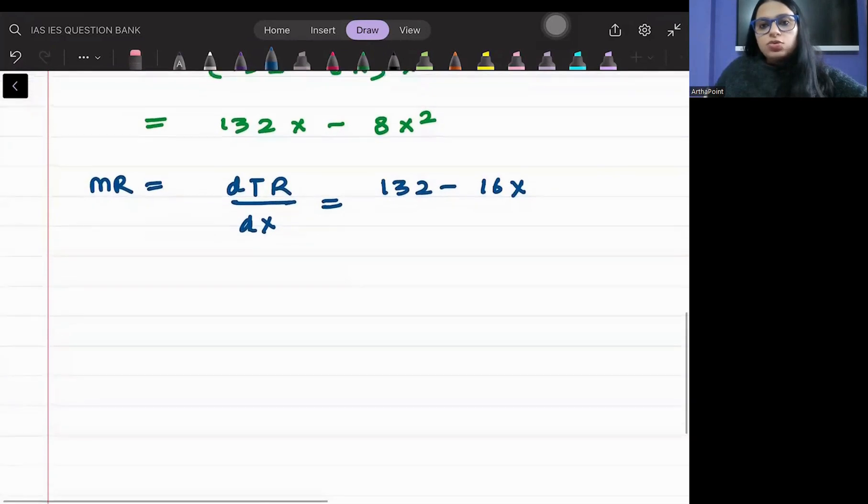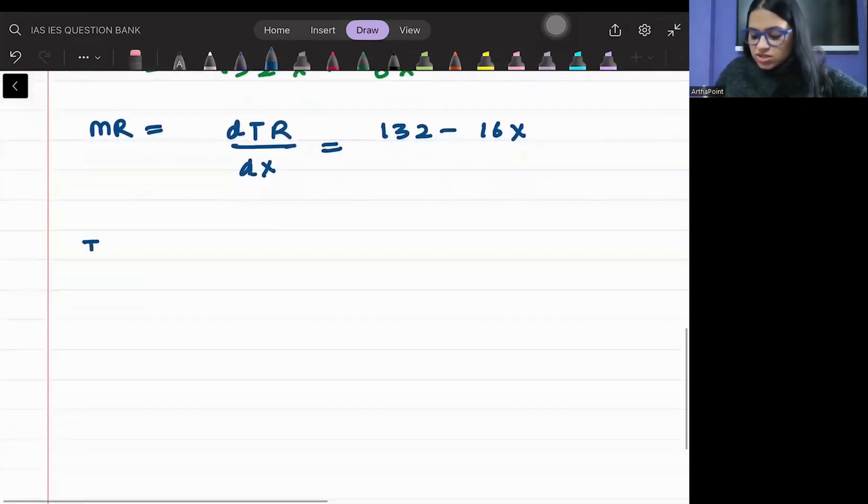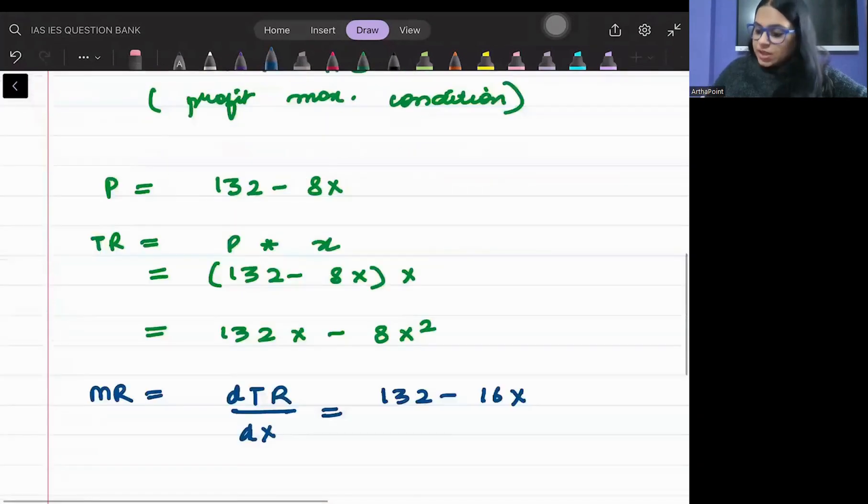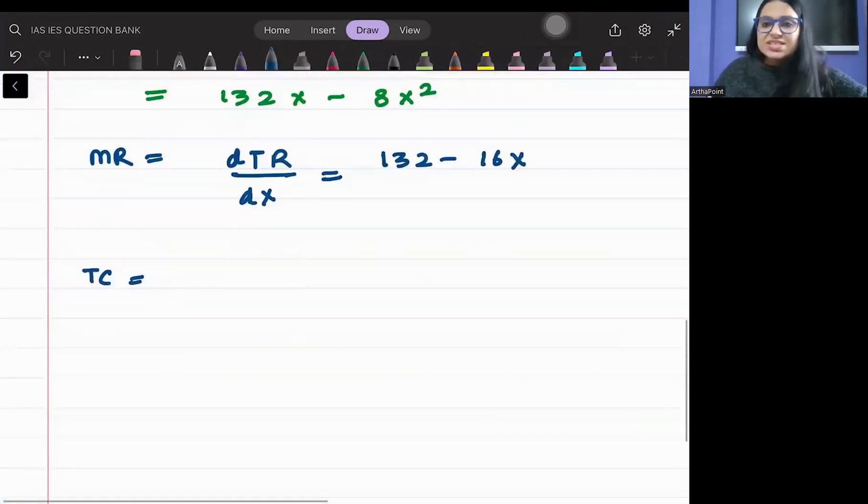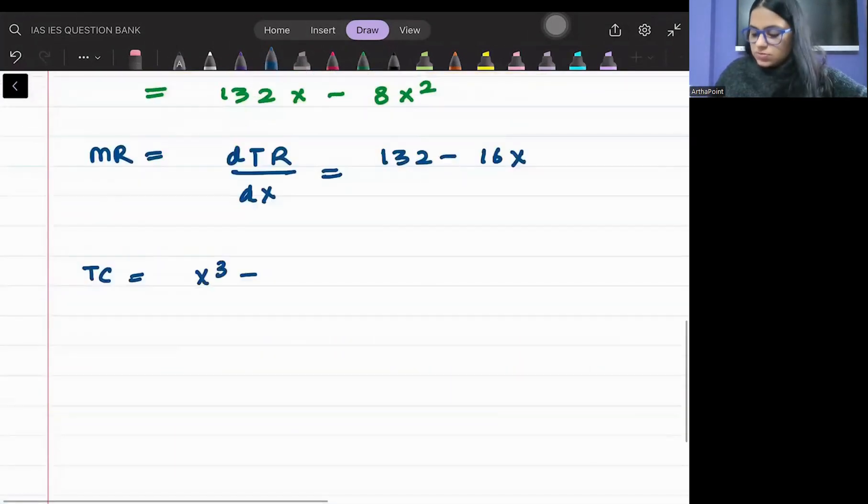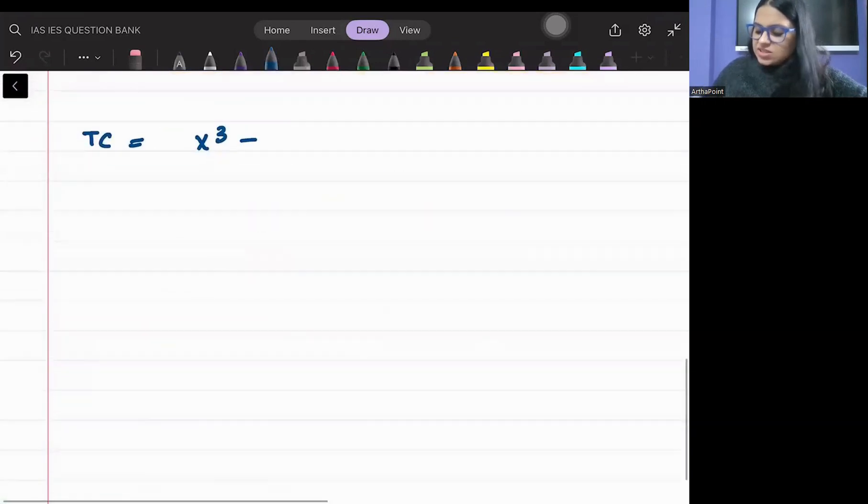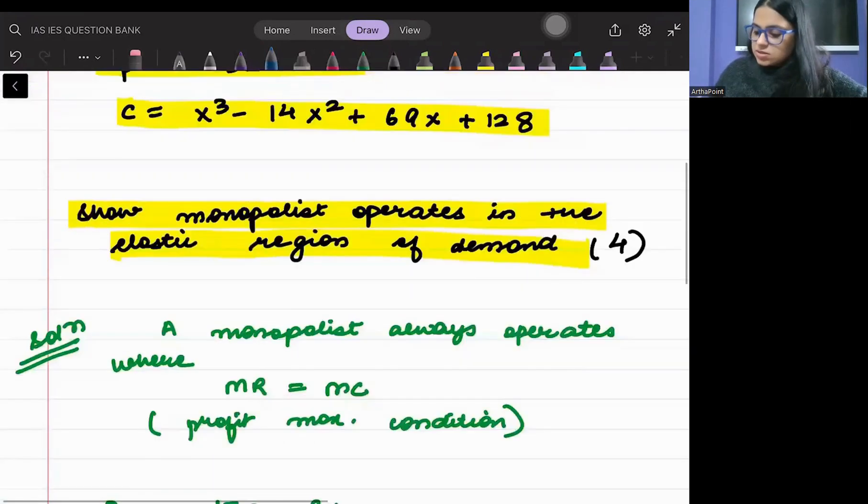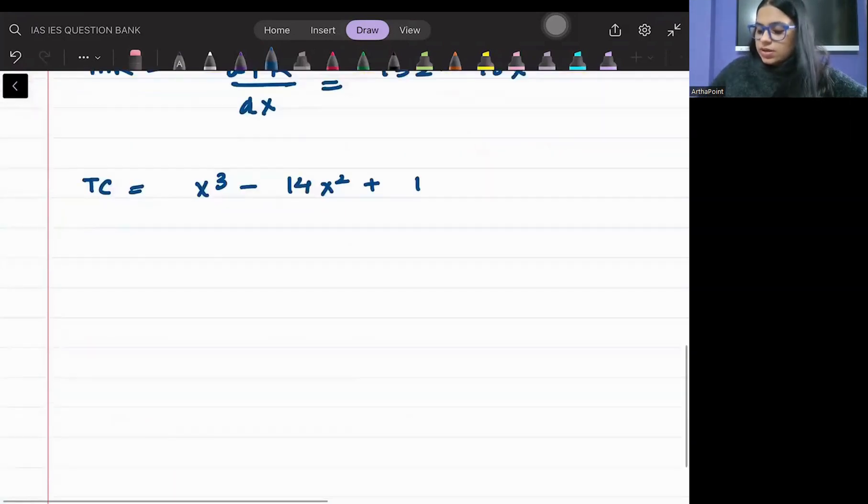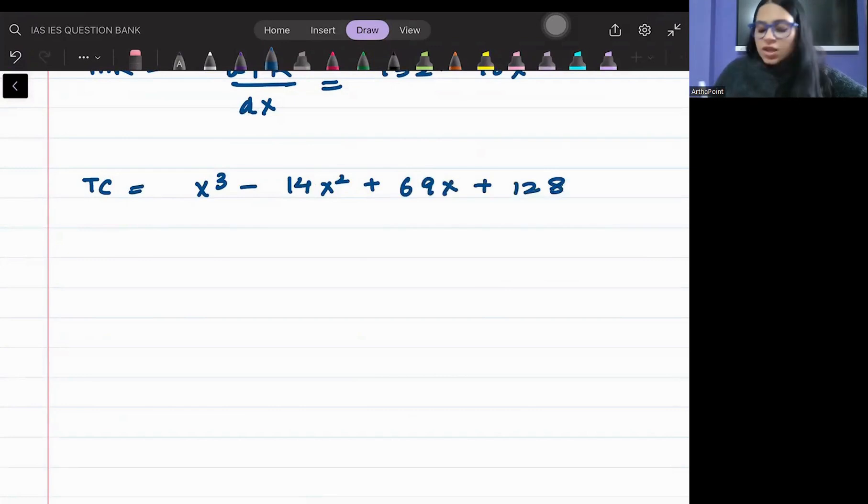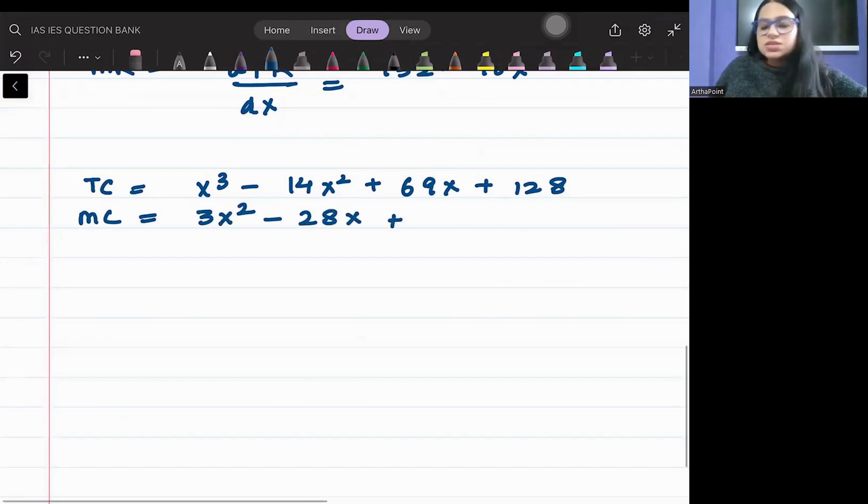Now let me talk about the marginal cost. So what is the cost function given to me? The cost function given to me is X cube minus 14X squared plus 69X plus 128. So what will be marginal cost? 3X squared minus 28X plus 69.